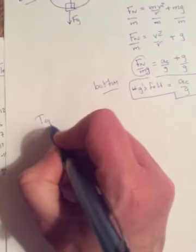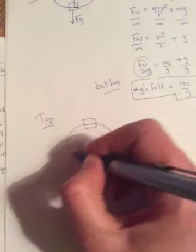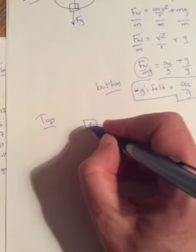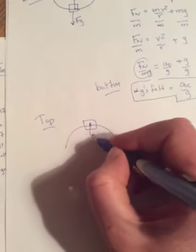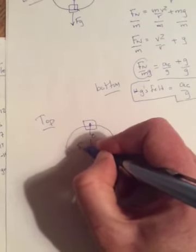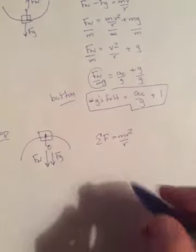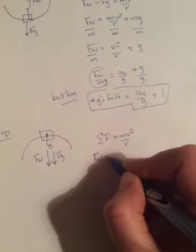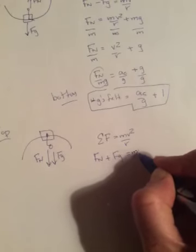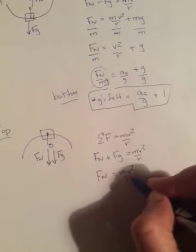If we do the top of the loop. If we do the top of the loop up here. And again, so when you go around the top, you'll be hanging your head down. And so going down is fg. And going down is fn. So when we do our sum of the forces is equal to mv squared over r. We have fn plus fg this time. Is equal to mv squared over r. So fn will be equal to mv squared over r minus mg.